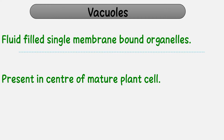Vacuole کے اندر بہت سارا fluid fill ہوا ہوتا ہے۔ Animal cell اور plant cell کے اندر بہت سارے small small vacuoles ہوتے ہیں جو plasma membrane کے اندر present ہوتے ہیں۔ لیکن plant cell کی بات کریں تو جب plant cell mature ہوتا ہے تو وہ سارے small vacuoles fuse ہو جاتے ہیں اور ایک بڑا vacuole بنا لیتے ہیں۔